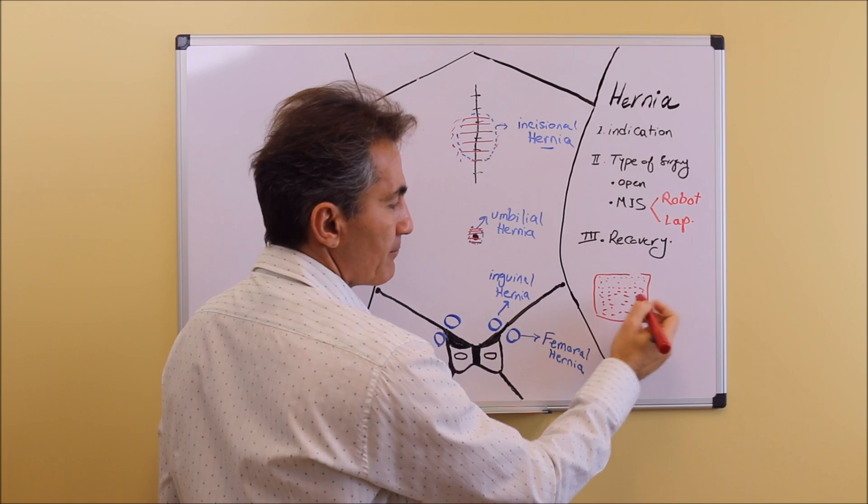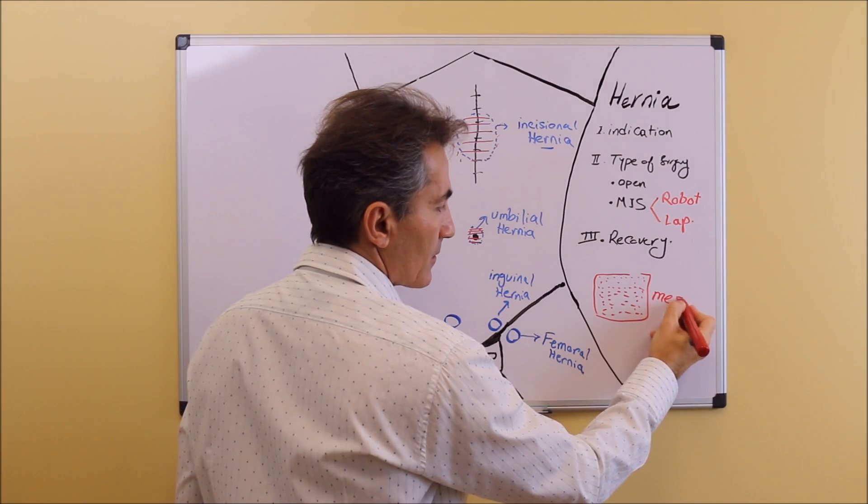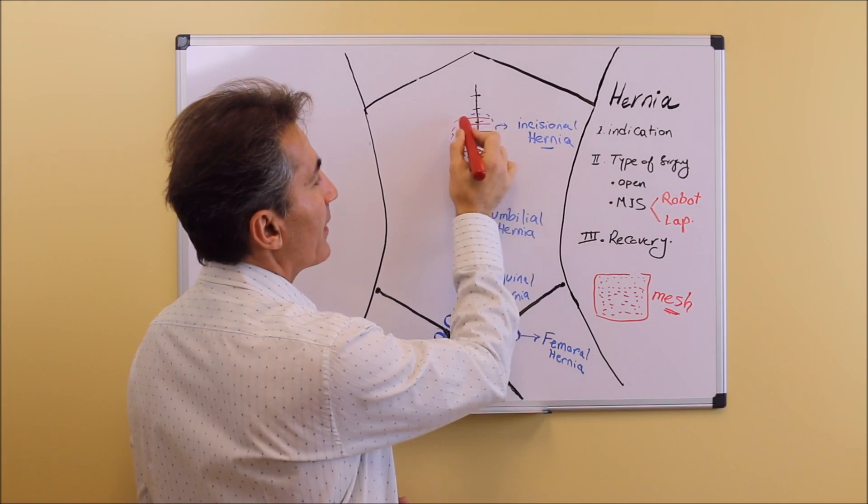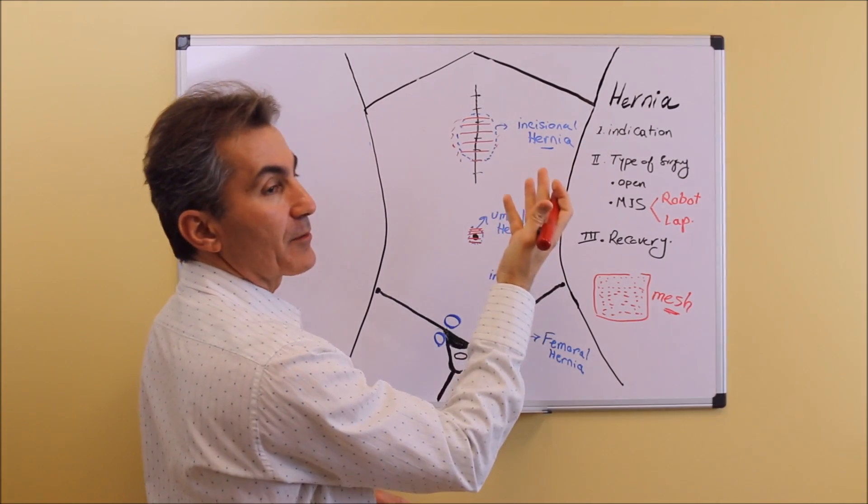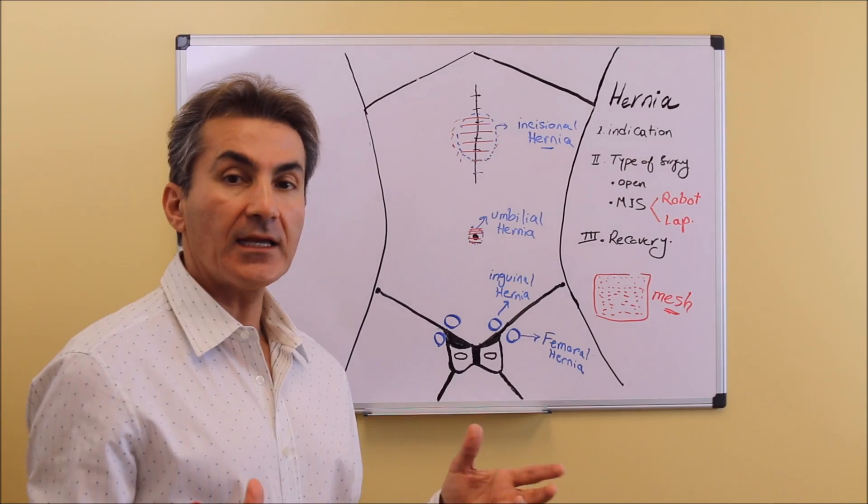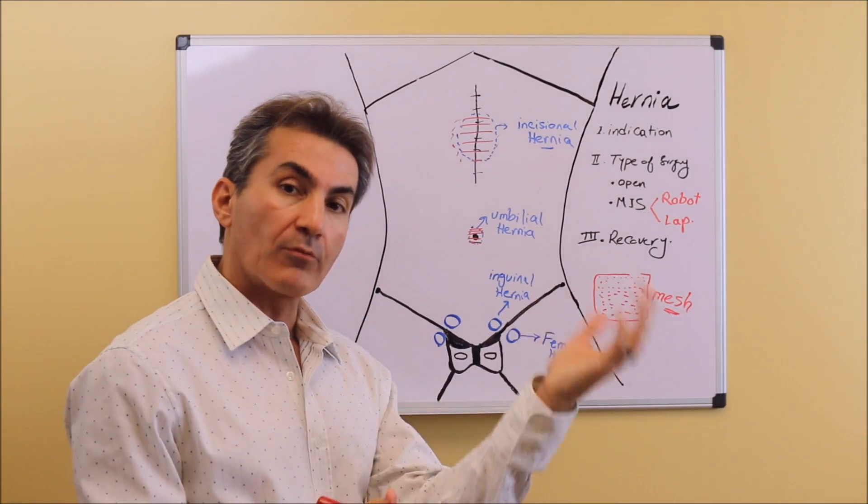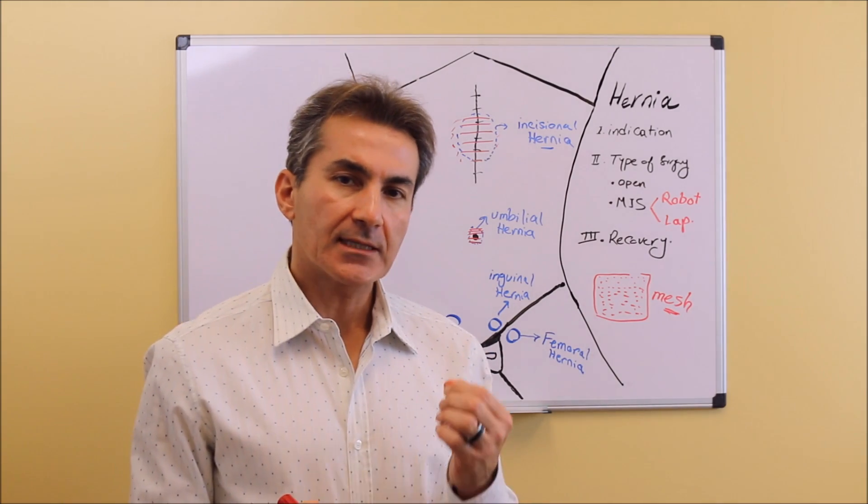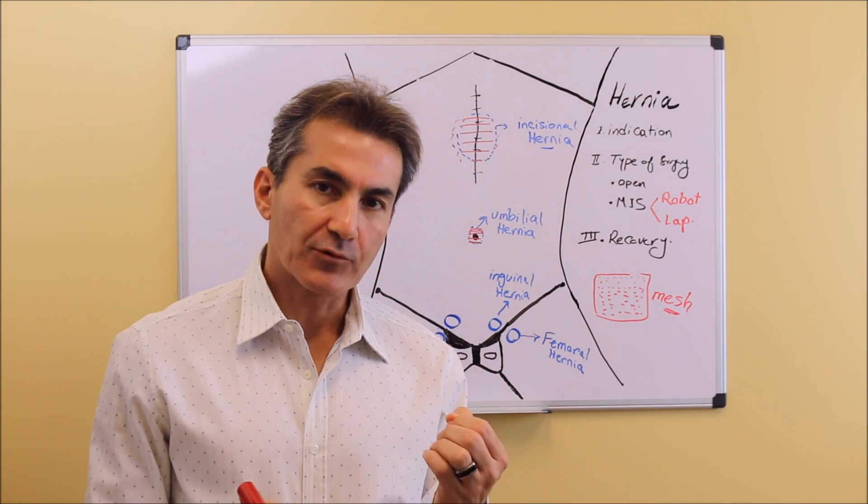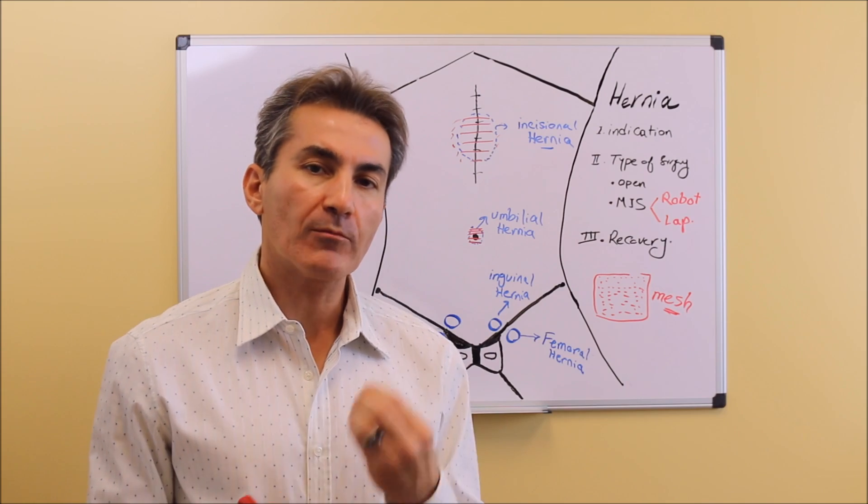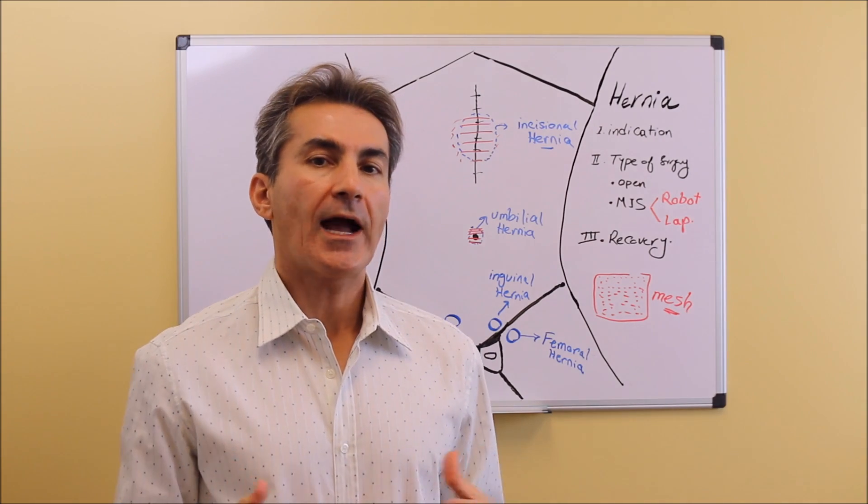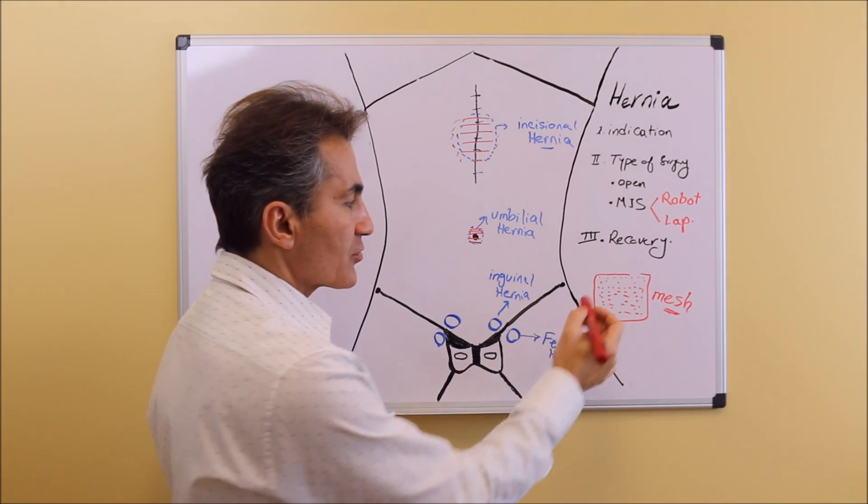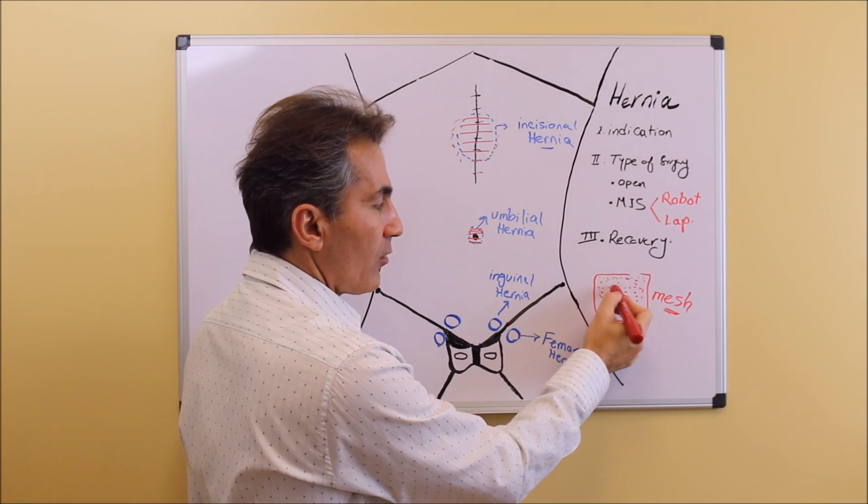We place that mesh over the top of the repair or underneath the repair. There are different techniques whether we put it on top of the muscle or below the muscle. It's a foreign body, an implant that does not absorb and creates a foreign body reaction. Your body reacts to it and creates scar tissue.